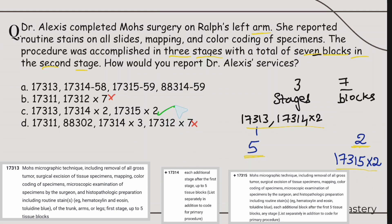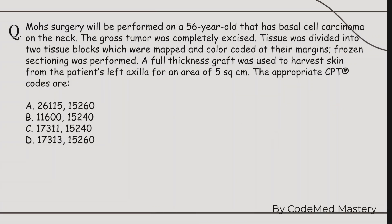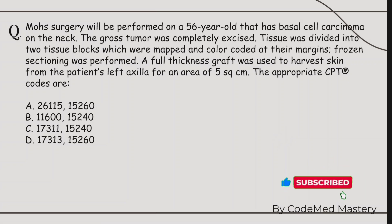In option A, the last code 88314 is for histochemical stain on frozen tissue block, but in this scenario frozen section pathology is not mentioned anywhere. So we cannot code 88314, and the other codes in option A are also wrong — eliminate option A. Don't forget to show your support by liking, sharing, and subscribing to CodeMed Mastery for more tips and tricks to clear your CPC exam in the first attempt.